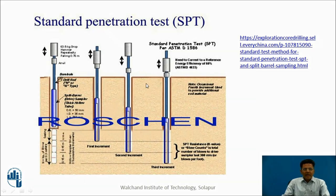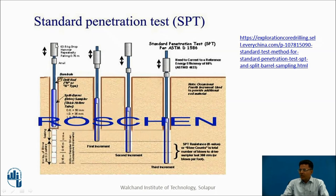When we penetrate the split spoon sampler during the test, these are the different positions shown — the split spoon sampler, the anvil, and the 63.5 kg drop hammer.